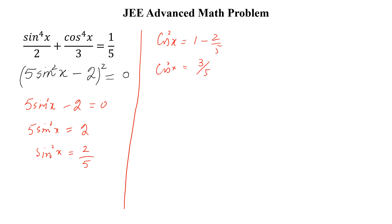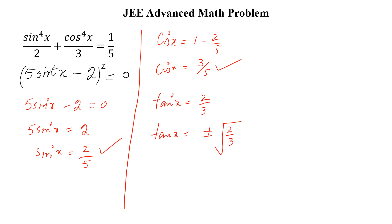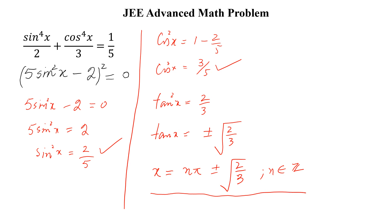So tangent square x is equal to sine square x over cosine square x, which gives tangent square x equal to 2 by 3. Therefore tangent x is equal to plus or minus square root of 2 by 3, and x is equal to n pi plus arctan of square root of 2 by 3, where n belongs to the set of integers. This is the required solution. Like the video, share with your friends, and don't forget to subscribe to my YouTube channel. Thank you.